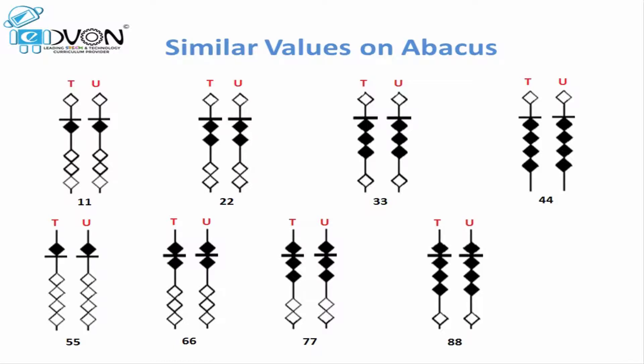For 88, we will move upper beat down and three lower beats up to touch the calculation bar on tens rod and units rod. For 99, we will move upper beat down and four lower beats up on tens and units rod as well to touch the calculation bar.